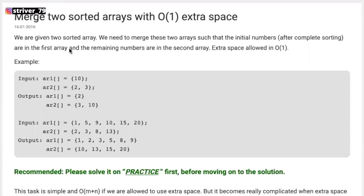The problem states that you'll be given two sorted arrays. For example, if you have 10, 2, 3, when you merge them it will be 2, 3, 10. The first array had a position for one element, so 3 and 2 will go over there.